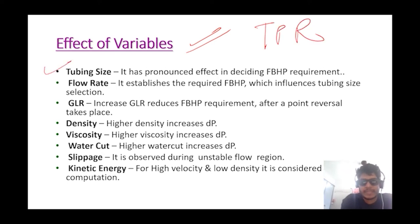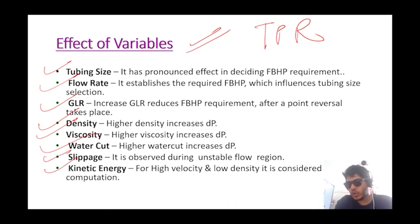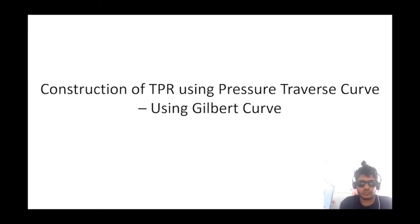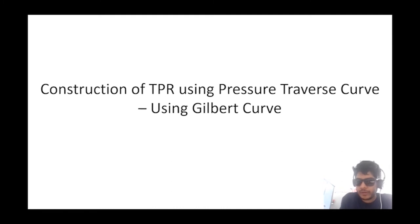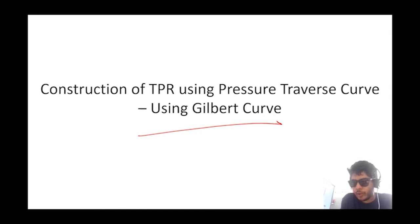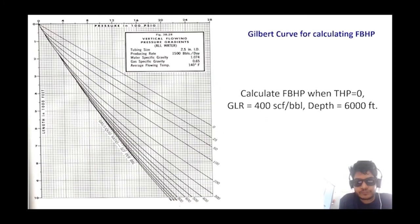The variables that affect TPR are: tubing size, flow rate, GLR, density, viscosity, water cut, slippage, and kinetic energy. Before discussing each variable, let's see how we construct TPR using the pressure traverse curve — the Gilbert method. This type of question has been asked in GATE 2019, where a graph was given and we had to find flowing bottom hole pressure — it was a two-mark numerical.